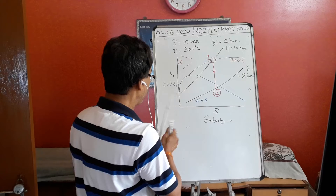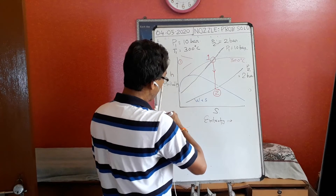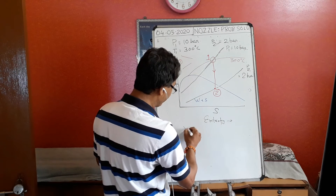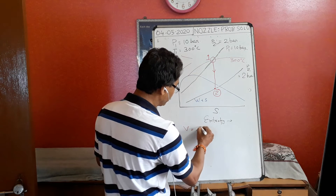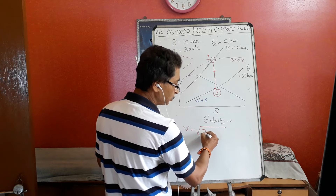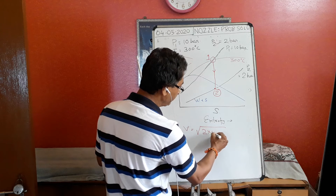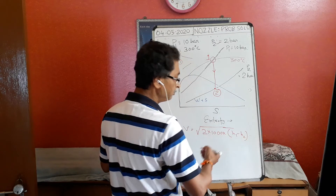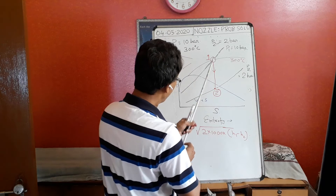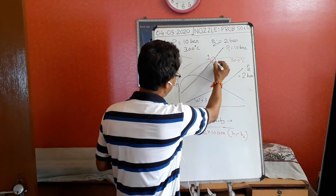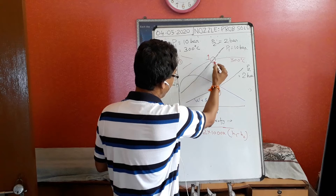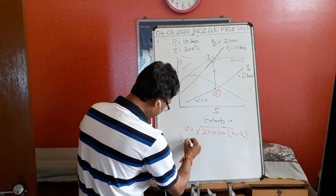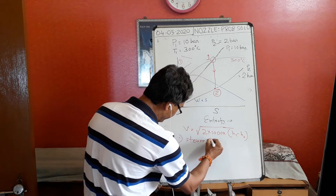Now I need to find the enthalpy values at both points. The velocity formula for a nozzle is: V equals the square root of 2 times 1000 times (H1 minus H2). So the objective is to find out the enthalpy H1 and H2, which I will obtain from the steam table.